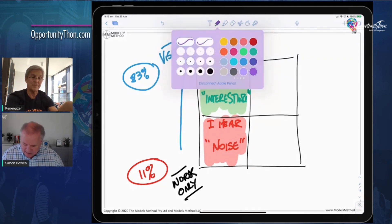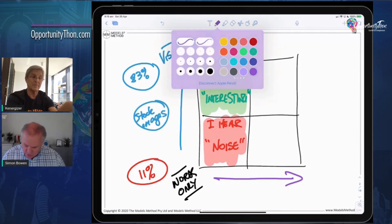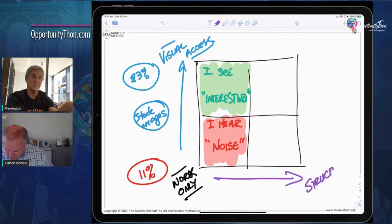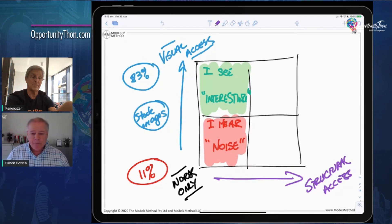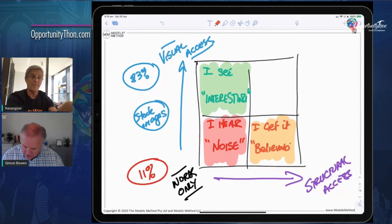If then we can give people—and interestingly enough, we could do this with stock images and things like that, photos—but if we can give people visual, structural access as well, which is what a model is doing, giving you a structure for the thinking, if we can give you structural access, we shift over to this other side where people say, 'Oh, I get it.' And that's believable because it has a structure. And the structure looks kind of scientific and organized, so it's believable.